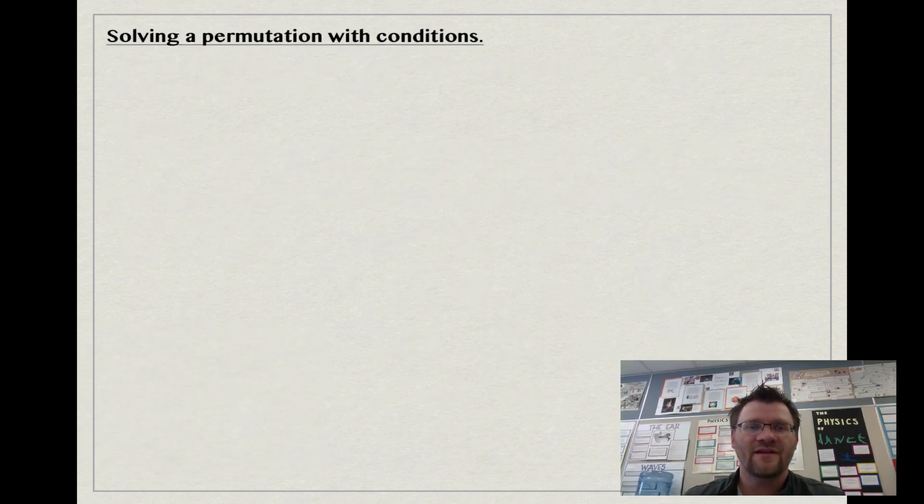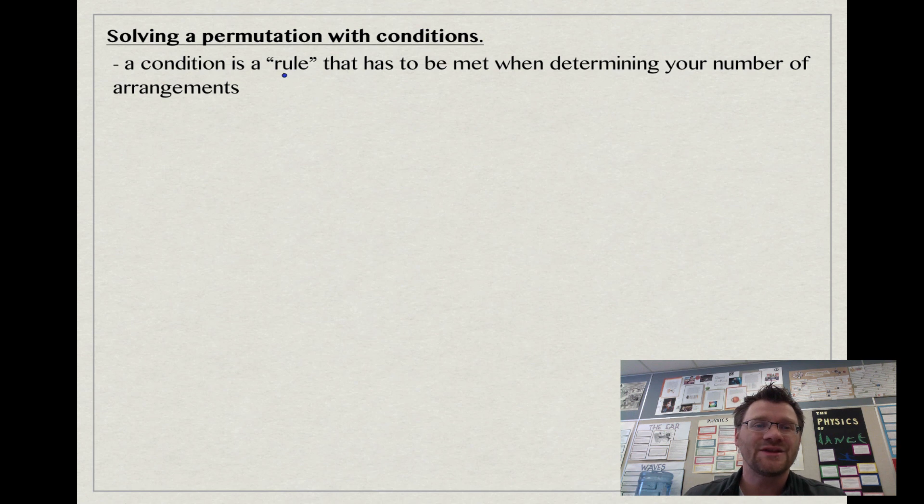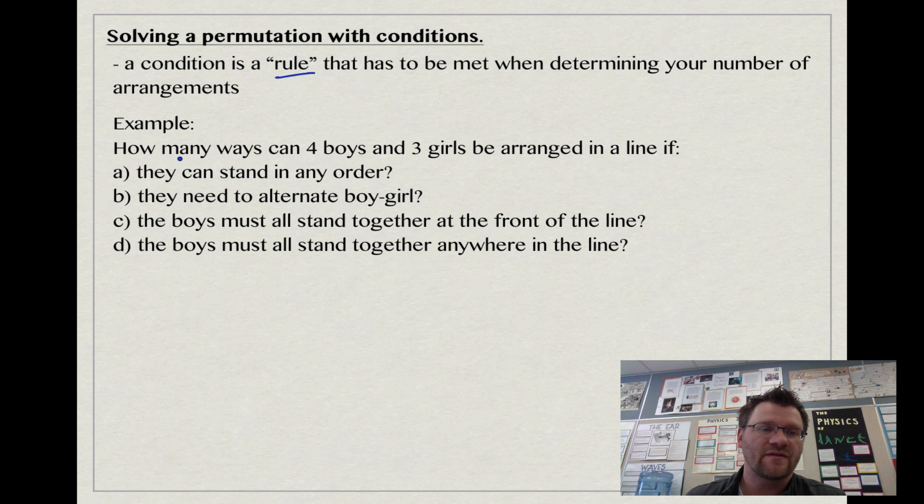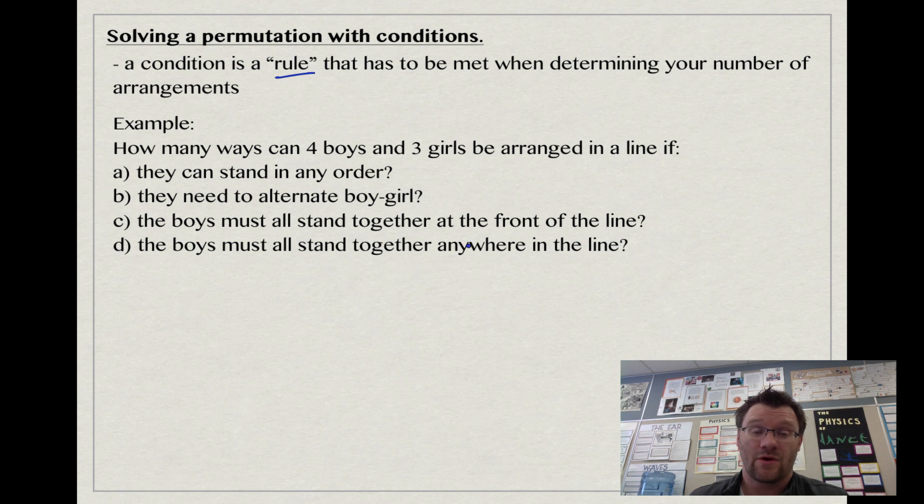Our next type of permutation question is a permutation with conditions. A condition is a rule that has to be met when determining your number of arrangements. Here's our example: how many ways can four boys and three girls be arranged in a line if they could stand in any order, they need to alternate boy-girl, the boys must all stand together at the front of the line, or the boys must all stand together anywhere in the line?